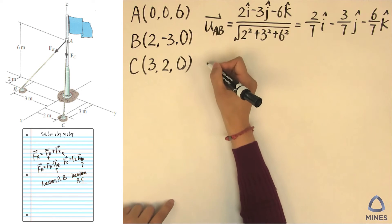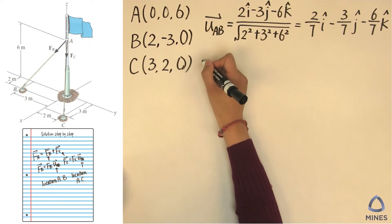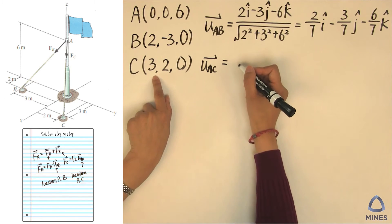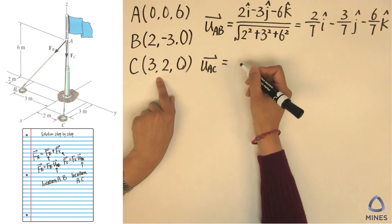Finally, we are going to do the same thing to write the unit vector in the AC direction, and remember we are going to use the endpoint minus the start point.